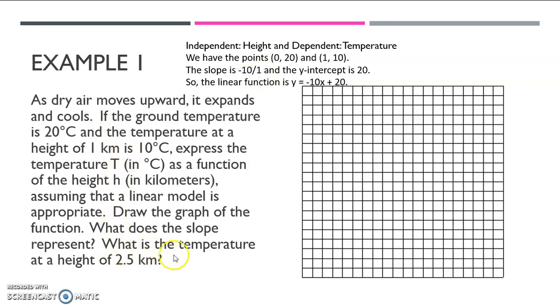Now, the last thing we need to do is figure out the temperature at a height of 2.5 kilometers. So all you need to do is take this 2.5 and put it in for X and see what you get. So go ahead and do that, and then press play to check your answer. So all you do is you do negative 10 times 2.5, which is negative 25, plus 20, which is negative 5. So the temperature at a height of 2.5 kilometers is negative 5 degrees Celsius.